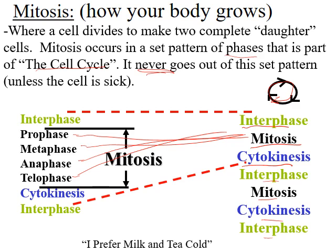'I' is interphase; 'prefer,' P, is prophase; 'milk' is metaphase; 'and' is anaphase; 'tea' is telophase; 'cold' is cytokinesis. Interphase and cytokinesis are not technically mitosis, but are part of the cell cycle, so it's good to know them. 'I prefer milk and tea cold' is a nice, simple way to remember everything.